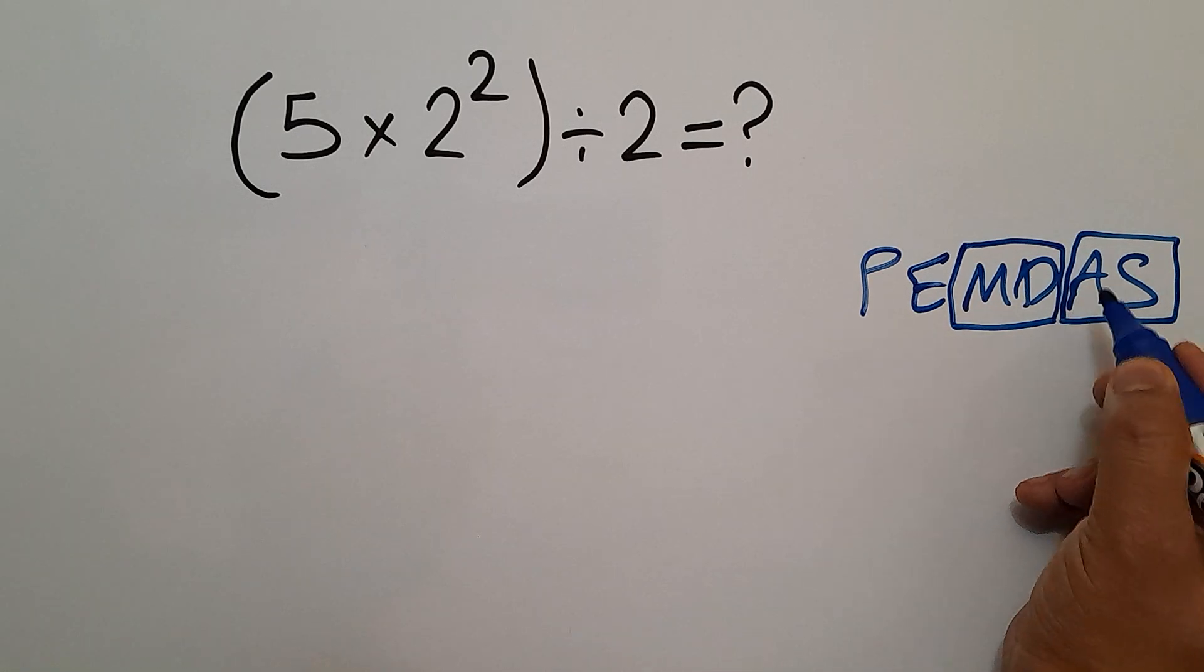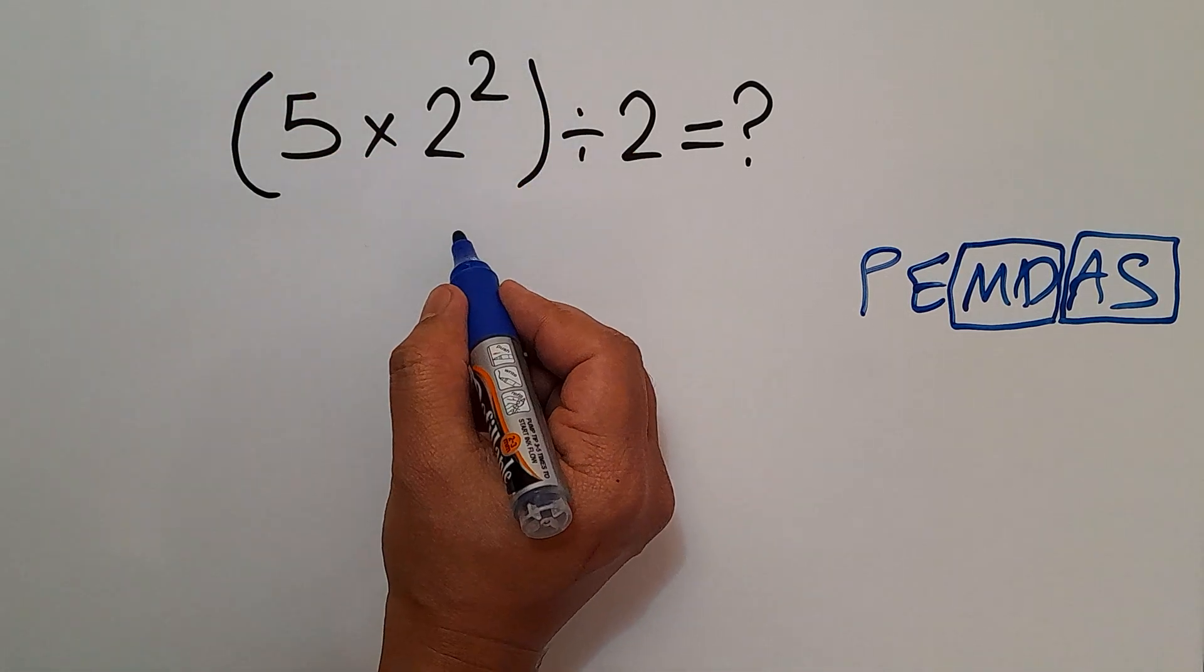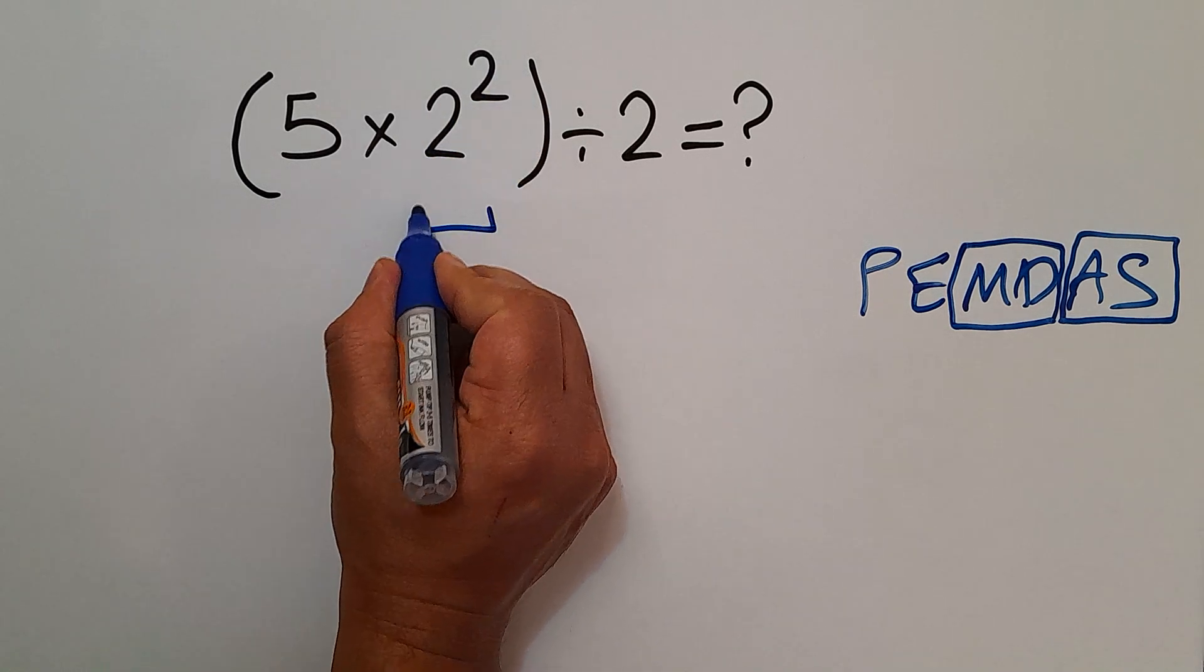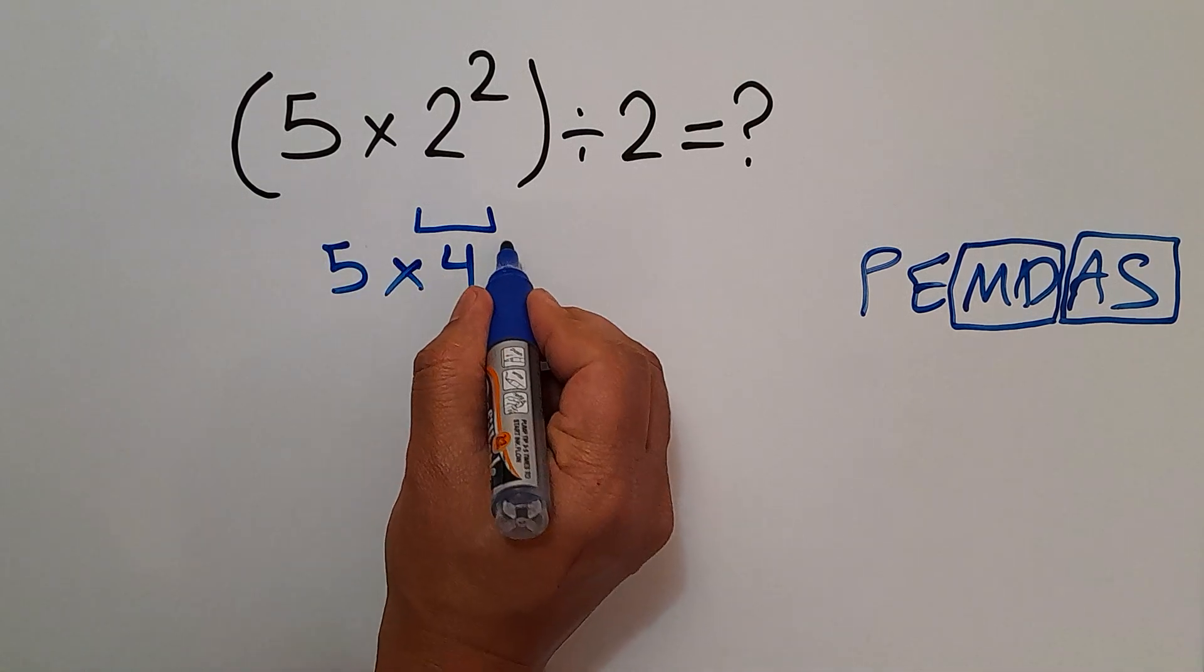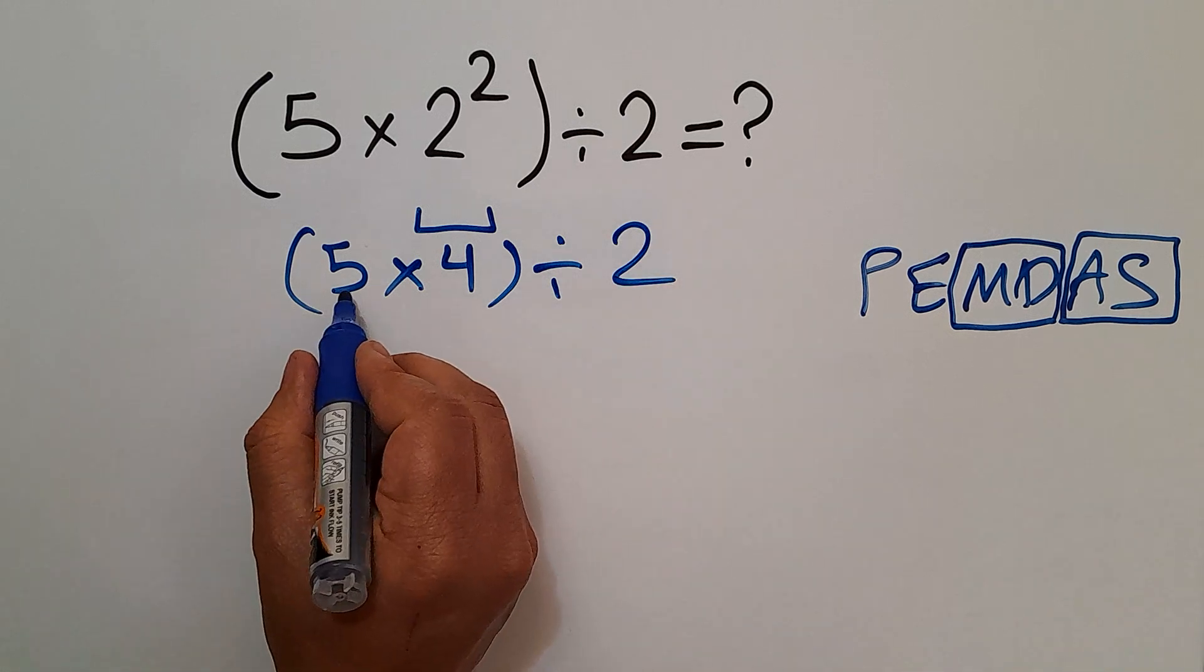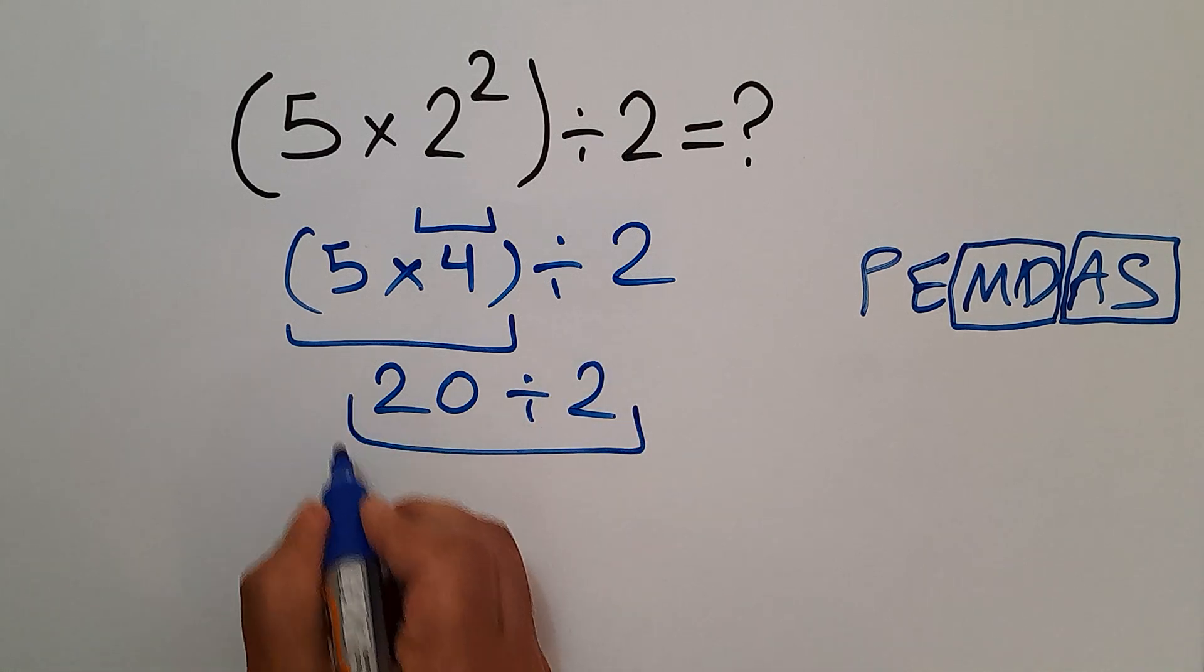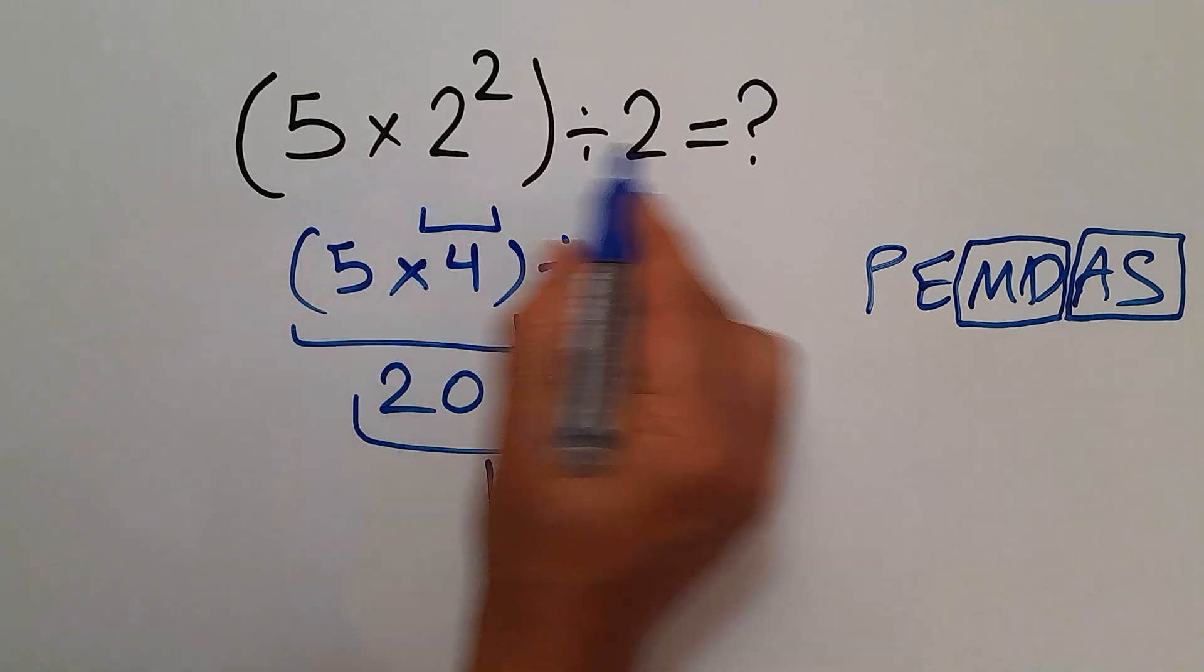So here we do first these parentheses, and inside these parentheses we have these exponents. So two squared equals four. Five times four, then divided by two. Five times four equals twenty. So twenty divided by two, which equals ten. So our final answer to this problem is ten.